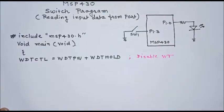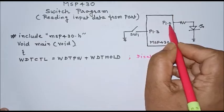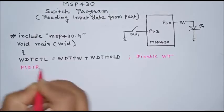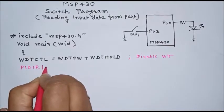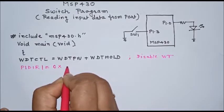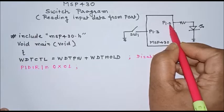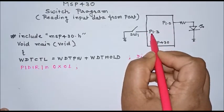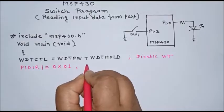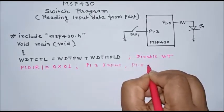Now we will select the direction of the port terminal. P1.3 we are using as an input terminal and P1.0 as an output terminal. For that, we have to initialize the P1DIR register to set the direction. We don't want to disturb the direction of other port terminals, so we will initialize it with 0x01 — 1 for P1.0 as output and 0 for P1.3 as input. This instruction sets P1.3 as input and P1.0 as output.